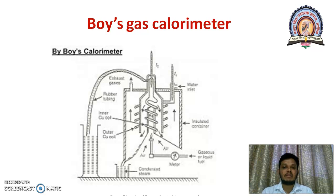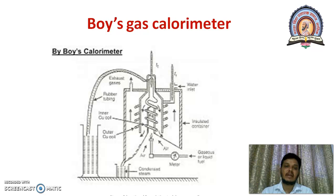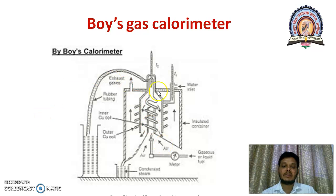I will again repeat the principle. A known volume of the gaseous fuel is burned at a known and constant rate. The liberated amount of heat is absorbed by circulating water. The rise in temperature is recorded. This is the simple schematic diagrammatic representation of Boyce gas calorimeter.